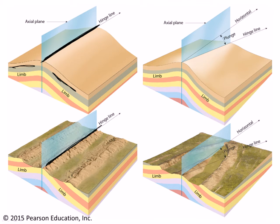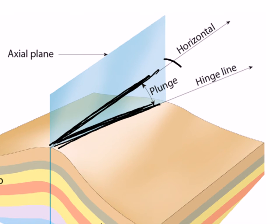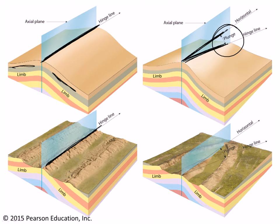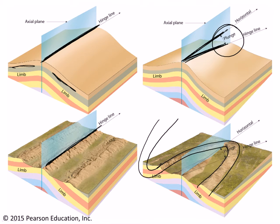Or the fold could extend down into the Earth at some angle, meaning the hinge line would have some angle with respect to the horizontal. That angle is referred to as the plunge. The result of plunging folds, like a plunging anticline, is that you get a V-shaped outcrop pattern. With an anticline that's plunging, it closes in the direction of plunge, whereas a syncline would be the opposite — it opens in the direction of plunge.